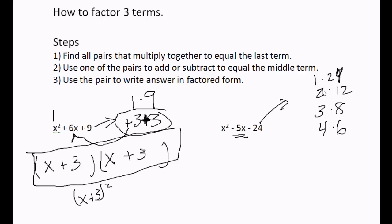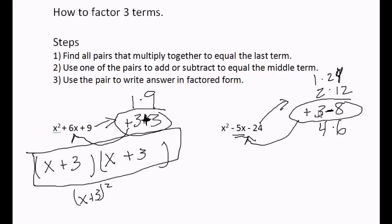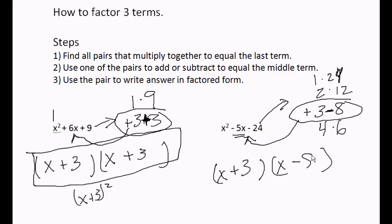Twenty-four minus one is twenty-three, twelve minus two is ten. If I put a negative eight and a positive three — positive three minus eight equals negative five. So this is the pair we're going to use. Two big parentheses, x in the first spot since we have x², then use the pair with signs: a plus three and a minus eight.